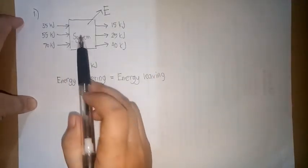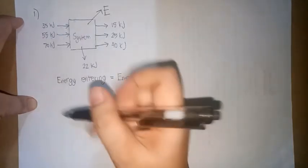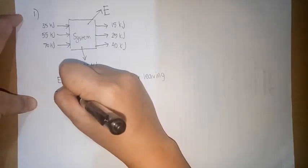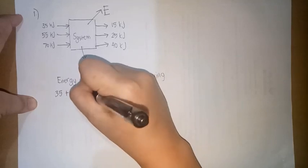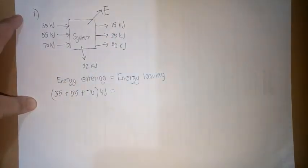So energy entering, alin ba yung mga pumasok or yung arrow is papunta dun sa system? We have 35, 55, and 70. Kukuha rin lang natin yung sumisyon ng tatlo. 35 plus 55 plus 70 kilojoules, equal sa energy leaving.